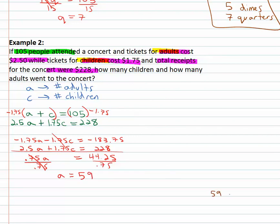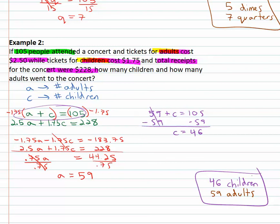We have 59 adults, sticking it in the corner here. We still need to know the number of children, so we go back to our original equations. We can use either equation, but the first equation looks much simpler. A plus c equals 105, a is 59 we know, plus c equals 105 and we quickly subtract 59 from both sides to find out c is 46. There are 46 children. 46 children and 59 adults, 105 people total, total receipts were $228.